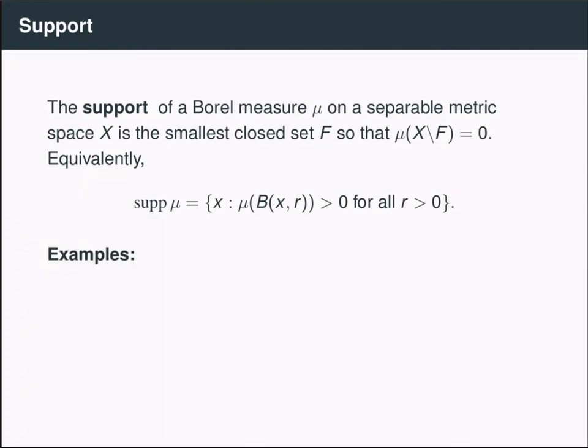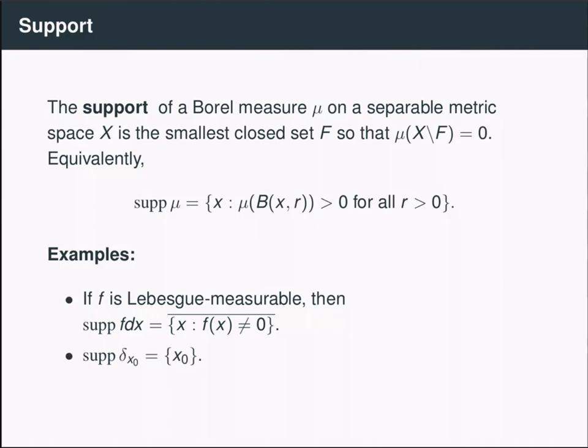So let's go over a few examples. If I have a function f, a Lebesgue measurable function, and I take it times Lebesgue measure, then the support of this measure is equal to the closure of the places where it's not zero. If I have a Dirac mass centered at x₀, then it's not too hard to show that the support of the Dirac mass is just the point x₀. So notice that by definition, every ball centered at x₀ has positive measure. For every point not equal to x₀, I can find a ball disjoint from x₀ centered at that point, and that ball will have measure zero according to the definition of Dirac mass.